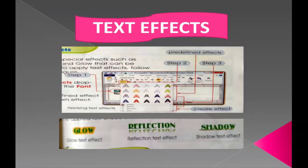Next is Text Effects. Text effects are special effects such as shadow, reflection, and glow that can be applied to text. To apply a text effect, follow these steps: number one, select the text; number two, click on the Text Effects drop-down arrow from the Font Group; number three, choose a predefined effect or create your own.